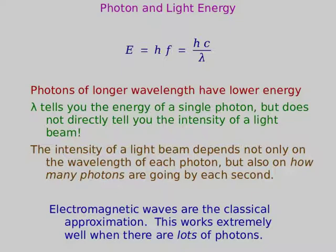Let's come back to photons and light energy. Here's the equation for the energy of a photon. Photons of longer wavelength have lower energy — you can just see that from the equation: if I divide hc by a bigger λ, I get a smaller E. So λ does tell you the energy of a single photon, but it does not tell you the intensity of a light beam. The intensity depends not only on the wavelength and therefore the energy of each photon, but on how many you're getting. It's the same with baseballs: if someone throws a 100-mile-an-hour baseball at you and you get hit by five at once, that's worse. The energy hc/λ is the energy of one photon — it does not directly correspond to the intensity of a light wave.